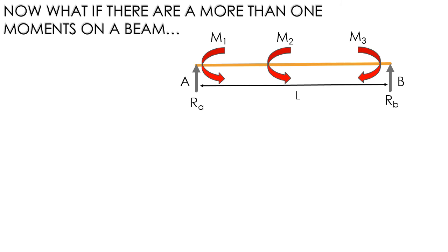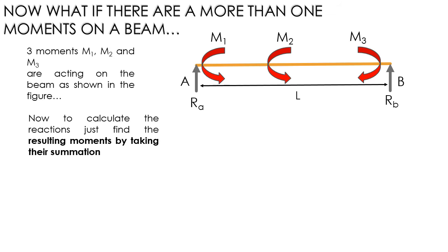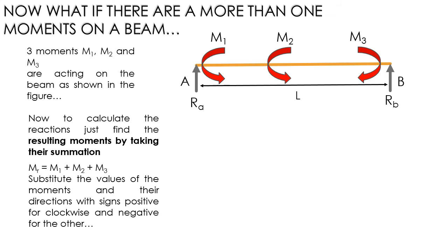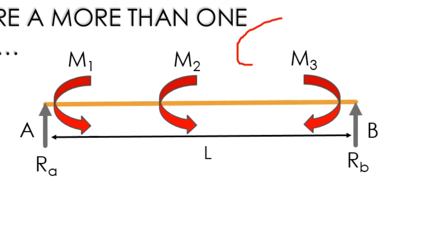What if there is more than one moment on a beam? Suppose three moments — M1, M2, and M3 — are acting on a beam. To calculate the reaction, just find the resultant moment by taking the summation: MR = M1 + M2 + M3, applying the sign convention: anti-clockwise as negative and clockwise as positive.